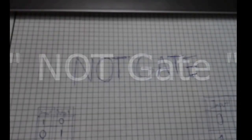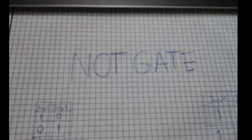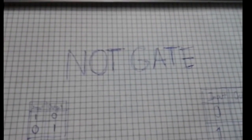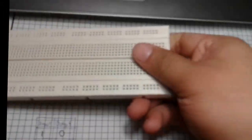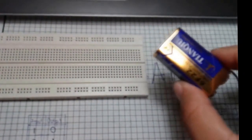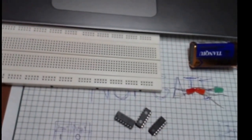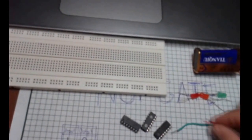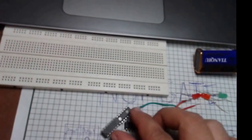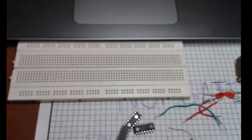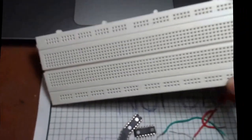So the output will be 0. Hello guys, my name is Ben and welcome to our tutorial. In this video tutorial I'm going to show you how to perform the NOT gate. Using these materials: I have here a breadboard, a 9-volt battery, an LED bulb, an IC, wire, and resistor.